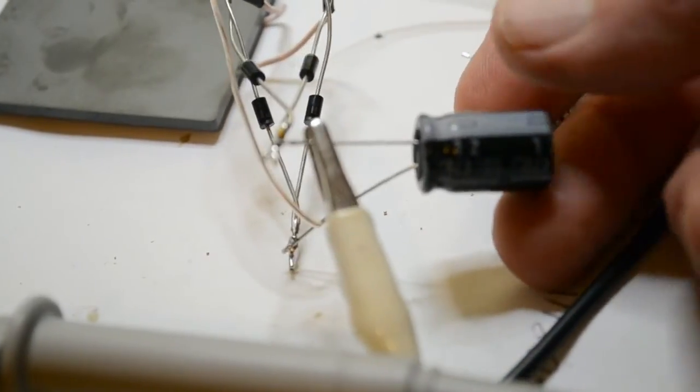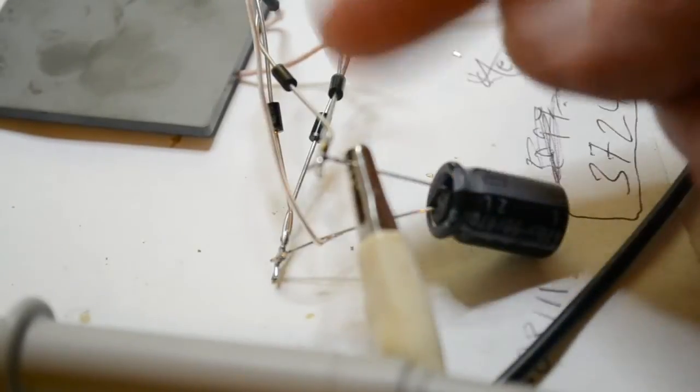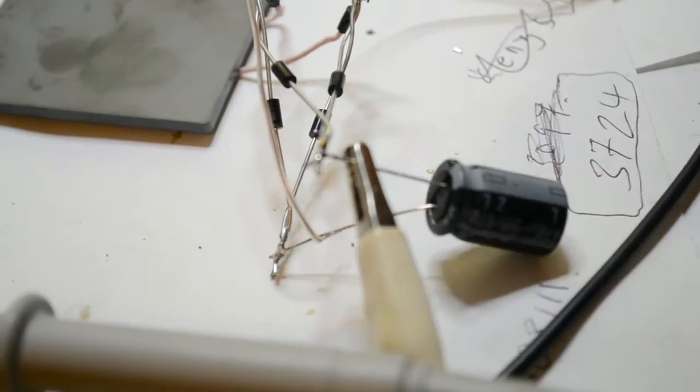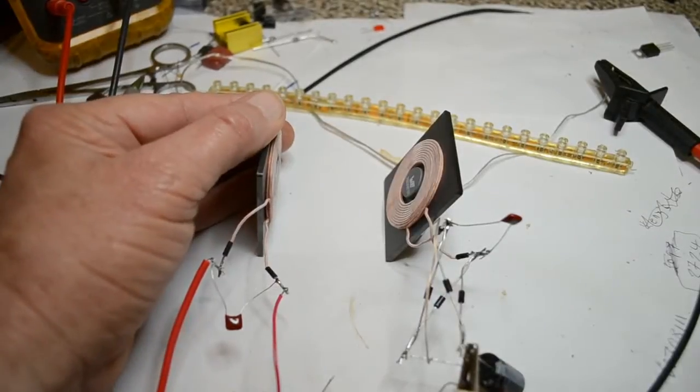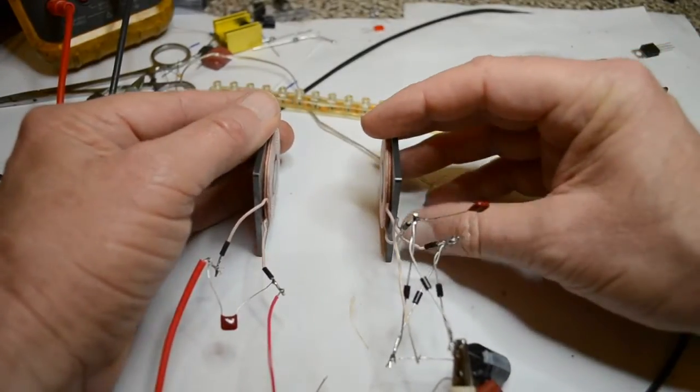This is a receiver: four high-speed diodes, another 47 nanofarad capacitor, and a 50-volt 470 microfarad smoothing capacitor. Now it's rectified and smoothed.